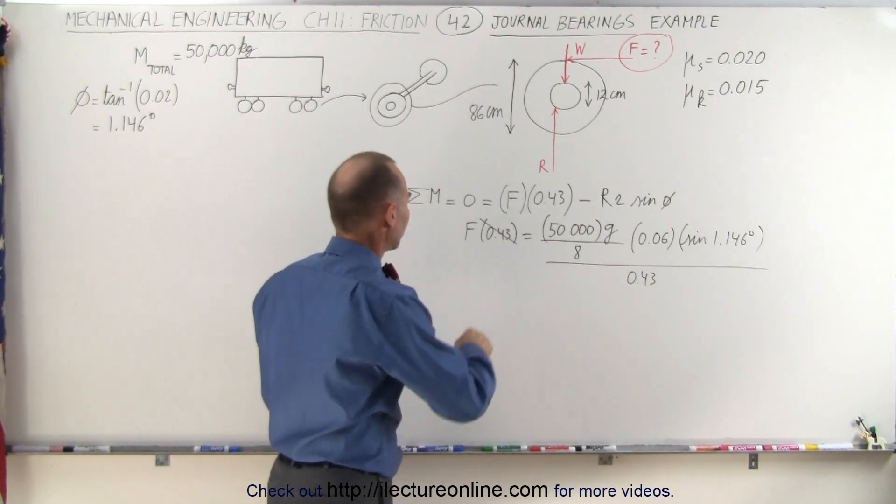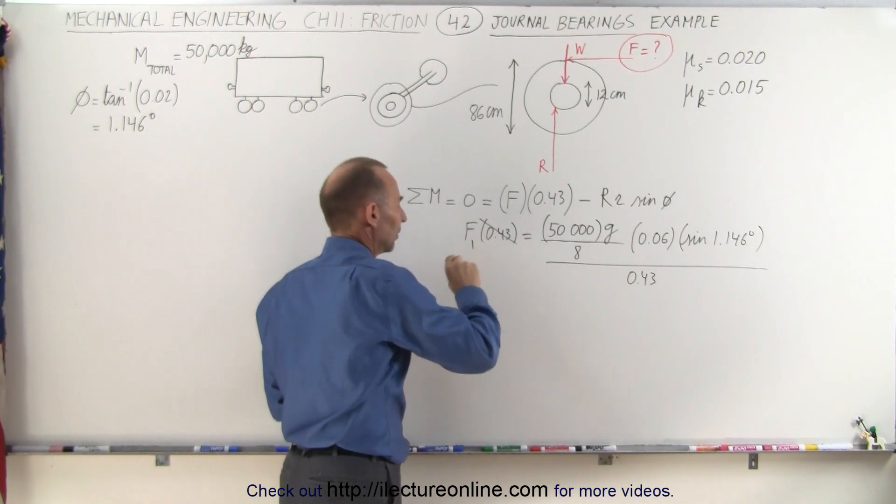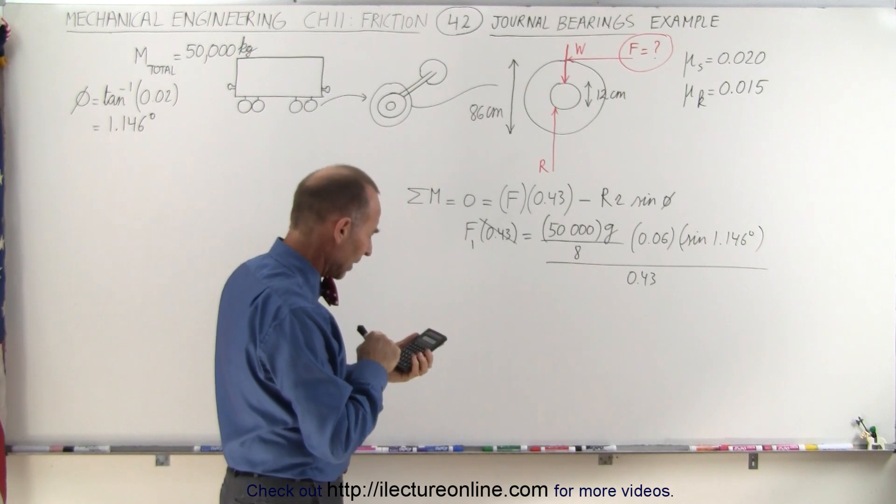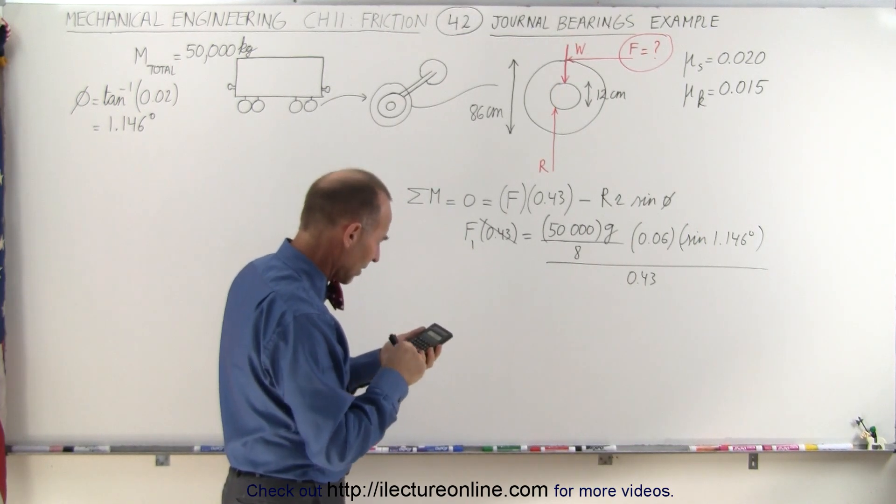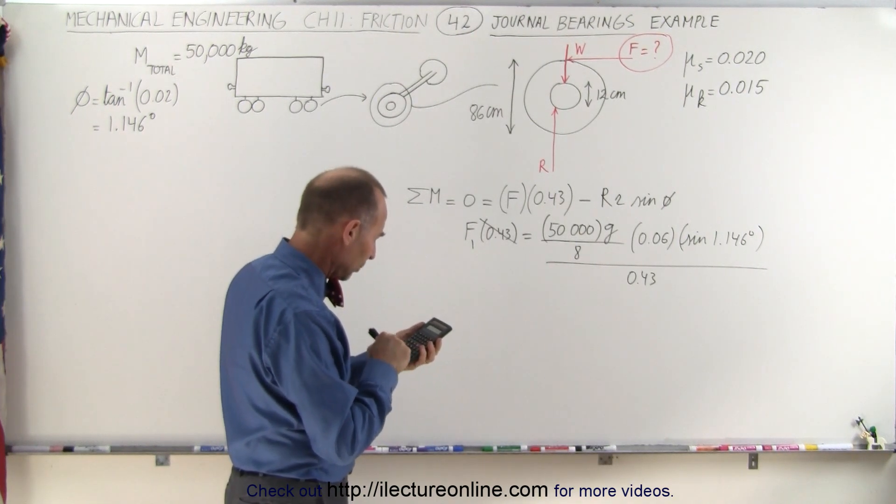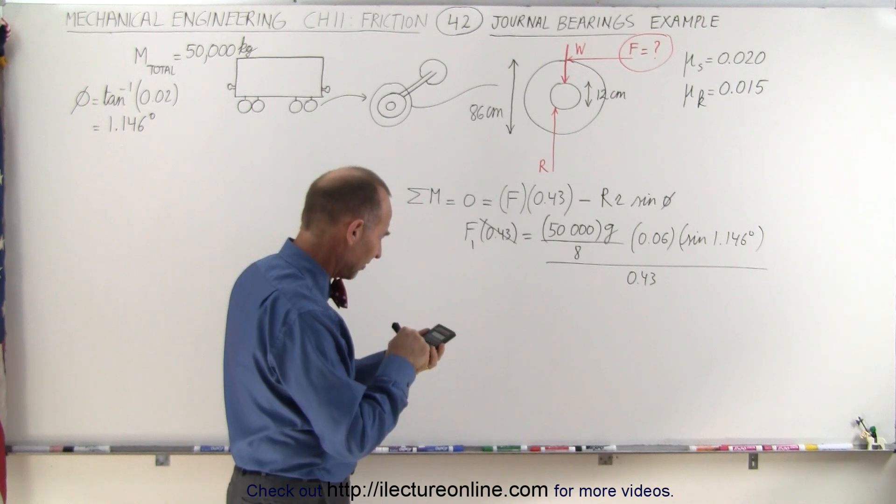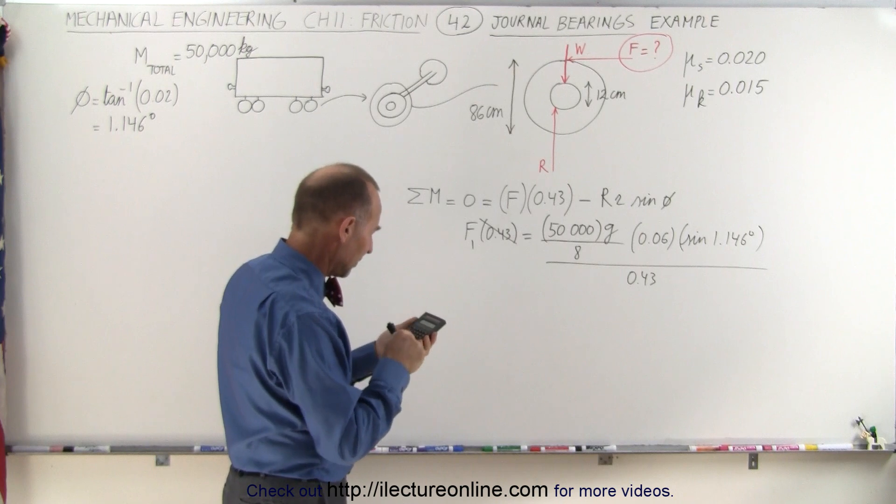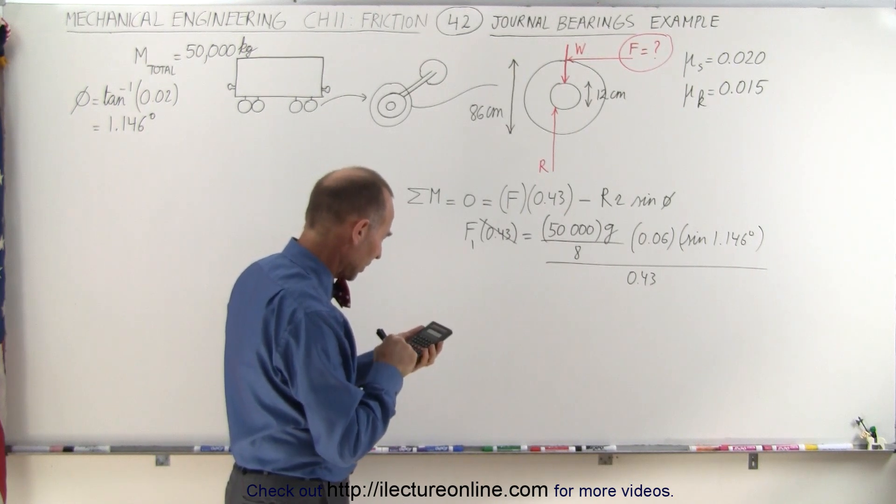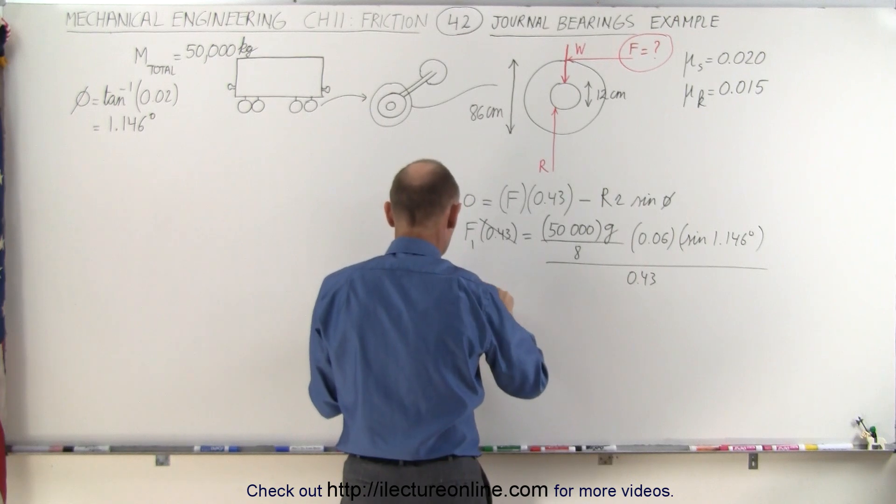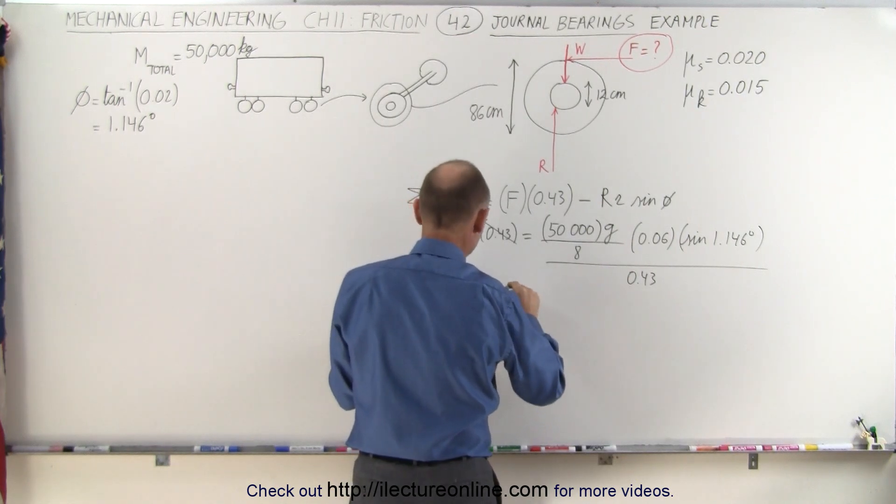So first what I'm going to do is I'm going to do F1 because that indicates the force on a single wheel. So 50,000 kilograms times 9.8, that's the number of newtons of the weight, times 0.06, times 1.146, take the sine of that, equals, divide by eight, and divide by 0.43. So the force required on each, F1, is equal to 171 newtons.